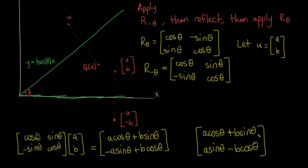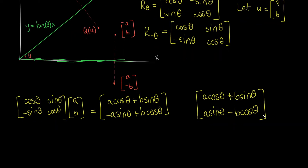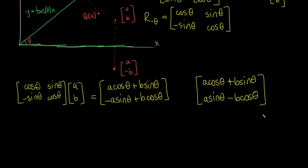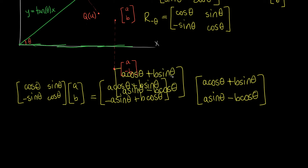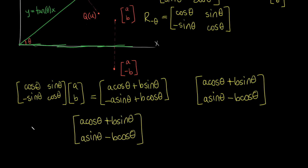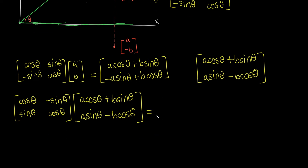Now that we have this reflected point, all we have to do is rotate it by theta again to get back to our old frame of reference, where this reflected point will be the solution to reflecting across the original line. So we multiply by the regular rotation matrix R(θ): cosine theta, sine theta, negative sine theta, cosine theta. This is going to give us a long answer, so let's scroll down and work it out carefully.